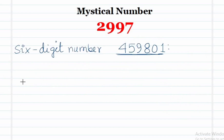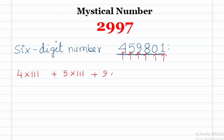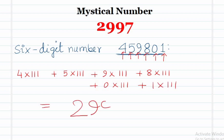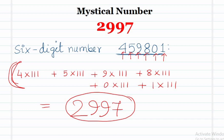The last example is the six digit number 459801. The digits are 4, 5, 9, 8, 0, and 1. If we multiply each of these digits by 111 and add them up, this gives us 2997 directly. Only one step is required to reach 2997.